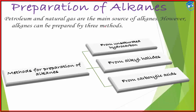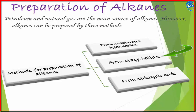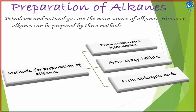There are three methods by which we can prepare alkanes. First is from unsaturated hydrocarbons, second is from alkyl halides, and third is from carboxylic acids. We'll study and examine each of these in great detail one by one.